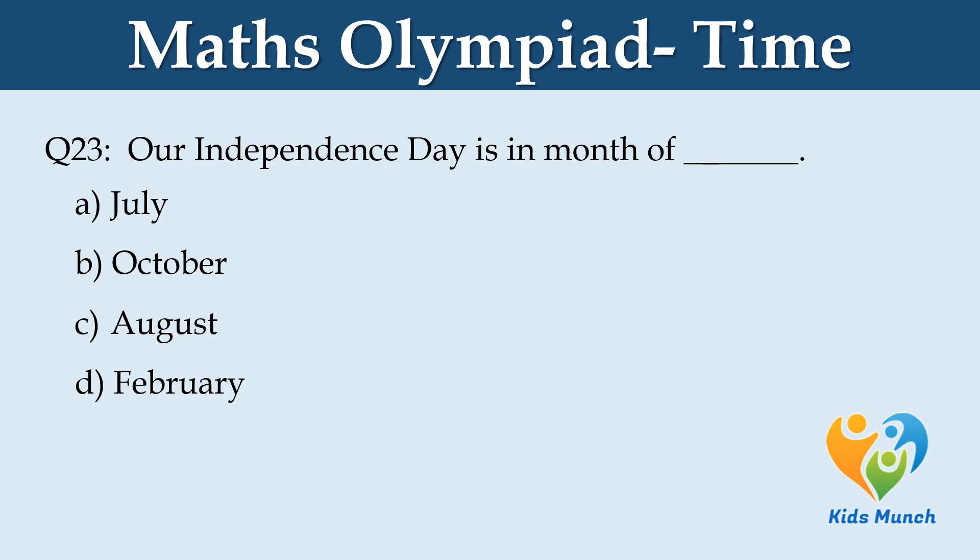Our Independence Day is in the month of dash. Option A: July. Option B: October. Option C: August. Option D: February.